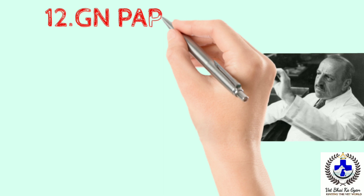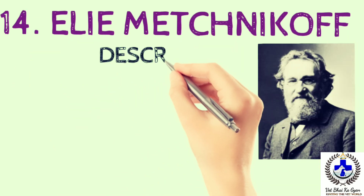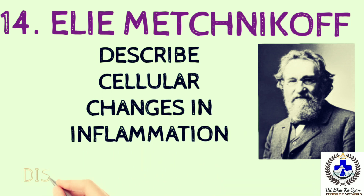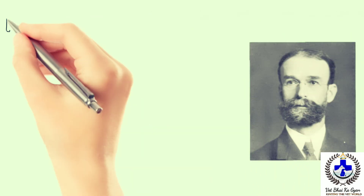Next we talk about famous scientist Julius Cohnheim — he is the originator of modern experimental pathology and demonstrated mainly vascular changes in acute inflammation. Next, scientist Élie Metchnikoff — he described cellular changes in inflammation and discovered phagocytosis.